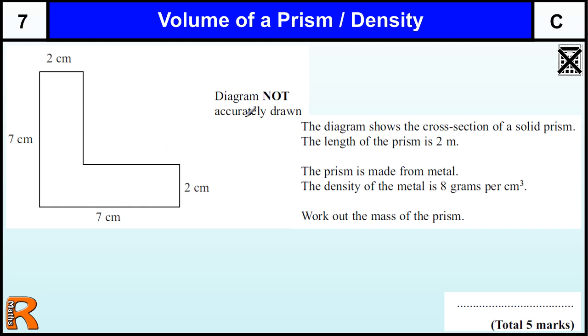Now, as always, diagrams are not drawn accurately. We've got a cross section of the prism - that means that's the end piece, and then the shape carries on off in this direction to form a three-dimensional shape. The length of the prism is two meters, so this way is two meters.